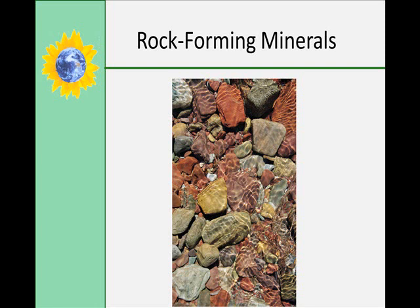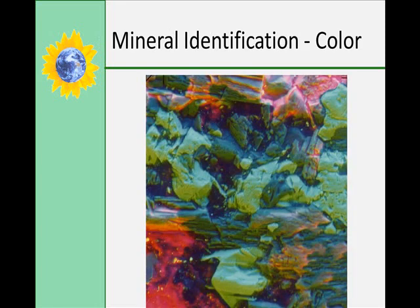Mineral identification can happen in a lot of different ways. The first way is color. However, color is not very reliable — it is easily observed, but many minerals have similar color. For example, gold and fool's gold are both gold in color, but you have to use other methods to determine which is which.